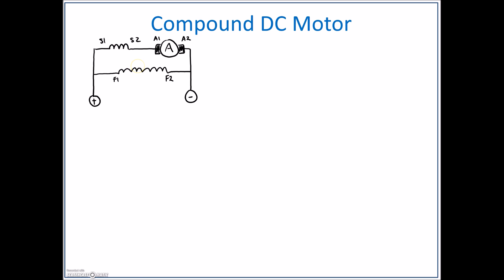And then we could do the compound DC motor. The correct name for this guy is the cumulative or additive. Compound is just basically the combination. So this is our cumulative compound DC motor.